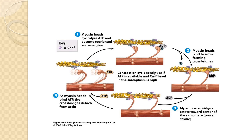Let's have a look at the mechanism of contraction. At step one in the figure, myosin has hydrolyzed ATP and become reoriented and energized. At step two, as ADP gets attached to the myosin head, myosin heads bind to actin forming cross bridges. When myosin cross bridges are formed they start to rotate towards the center of the sarcomere — you can see this at step three. When ATP is attached, the myosin heads bind ATP and the cross bridges detach from actin — shown at step four. After detachment, the same cycle goes on.